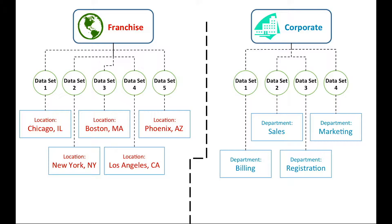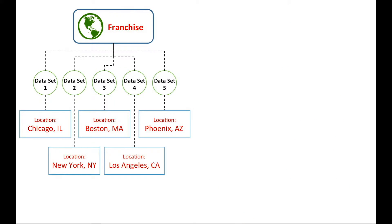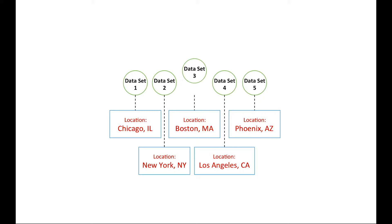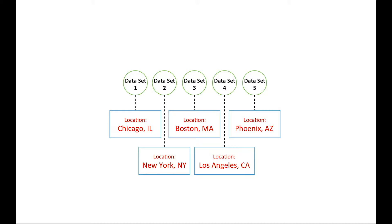These permissions are completely customizable and you are able to control exactly what each role can see and access. In our example, let's say we have a business with five locations. Using sub-accounts, each location can have their own database. This ensures that contact information, sign-up tools, and recent message histories stay separated.